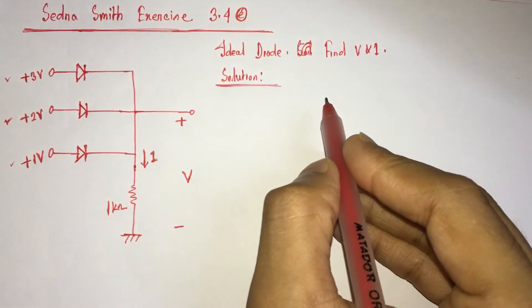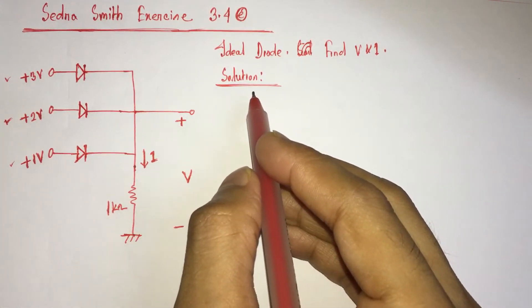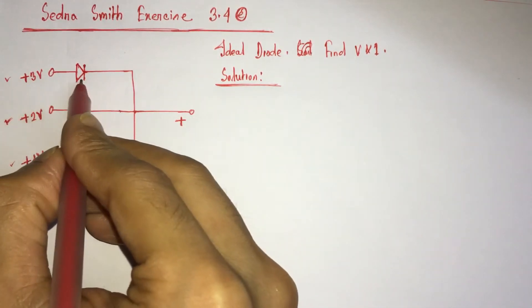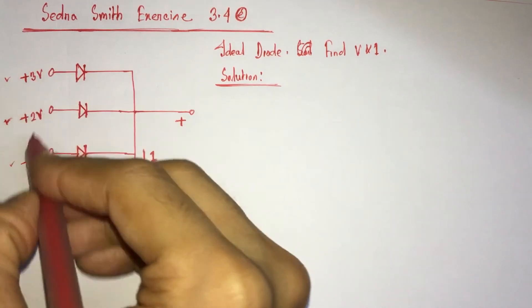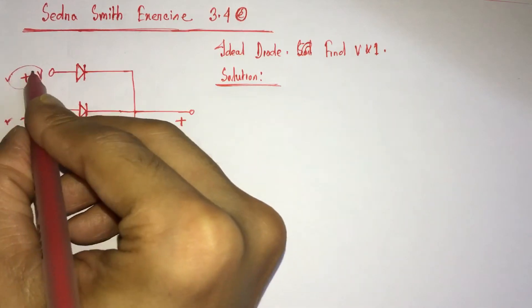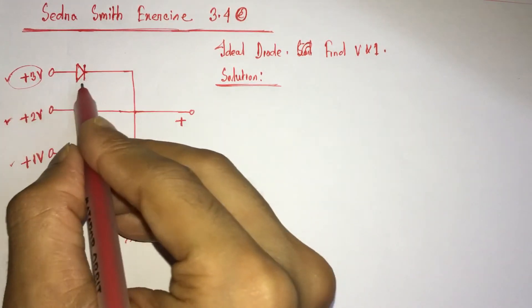We have to keep in mind that for positive OR gate, the diode with highest biasing voltage, that is here highest biasing voltage is 3 volt, this diode with highest biasing voltage will conduct.